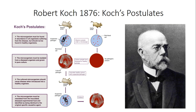Koch was able to isolate the same bacteria, and this is how he determined that specific bacteria cause specific diseases. Bacillus anthracis causes anthrax. Koch's postulates are still used today to determine the cause of diseases. They're not foolproof — there are some problems with them — but in general they help us figure out what's causing diseases.